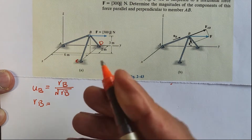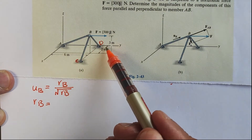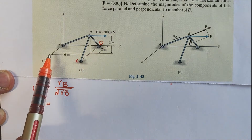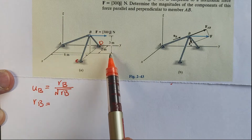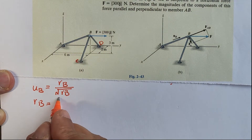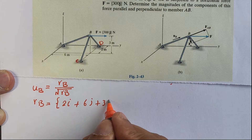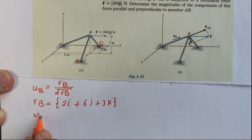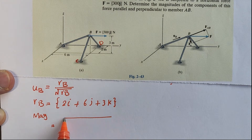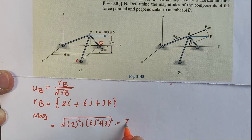Finding R_B: the force is applied along the y-axis, so we have positive 2 meters along the x-axis, positive 6 meters along the y-axis, and positive 3 meters along the z-axis. This gives us R_B = 2i + 6j + 3k. The magnitude is the square root of 2² + 6² + 3², which equals 7 meters.